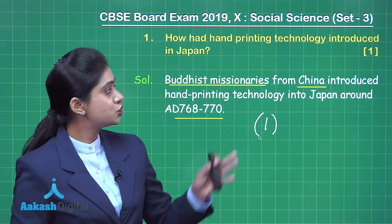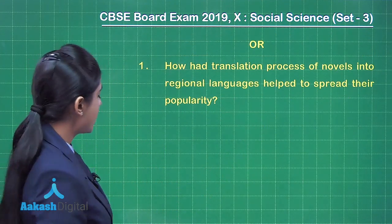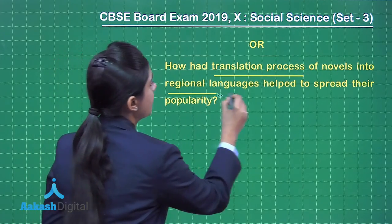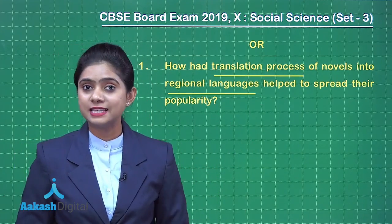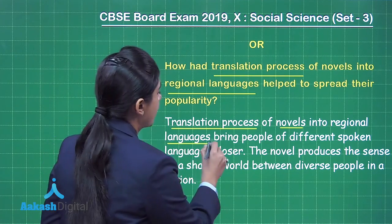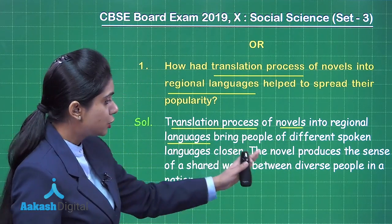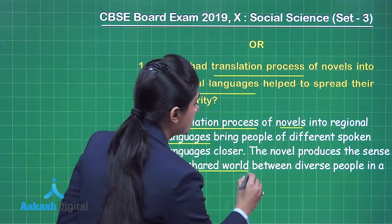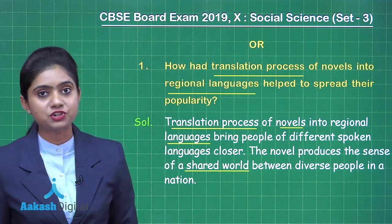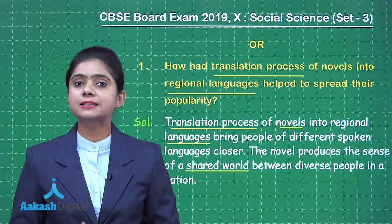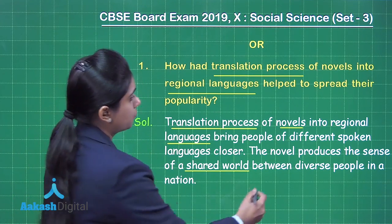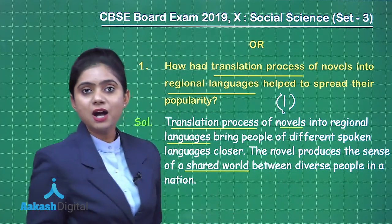Now let's see the choice question: How had the translation process of novels into regional languages helped to spread their popularity? The translation process of novels into regional languages brings people of different spoken languages closer. The novel produces a sense of a shared world between diverse people in a nation. When novels were translated into regional languages, it brought people from different communities and countries together.